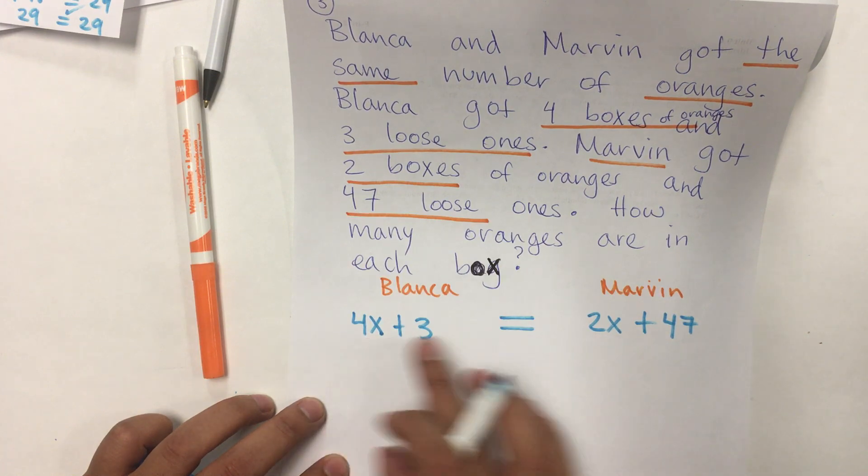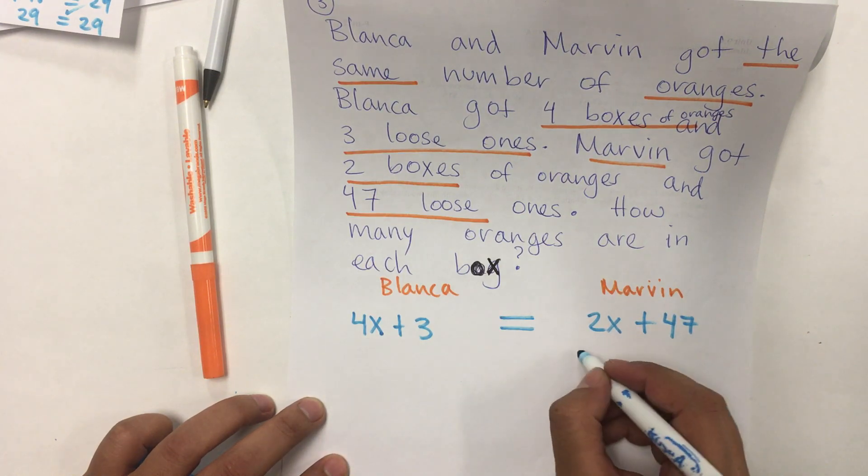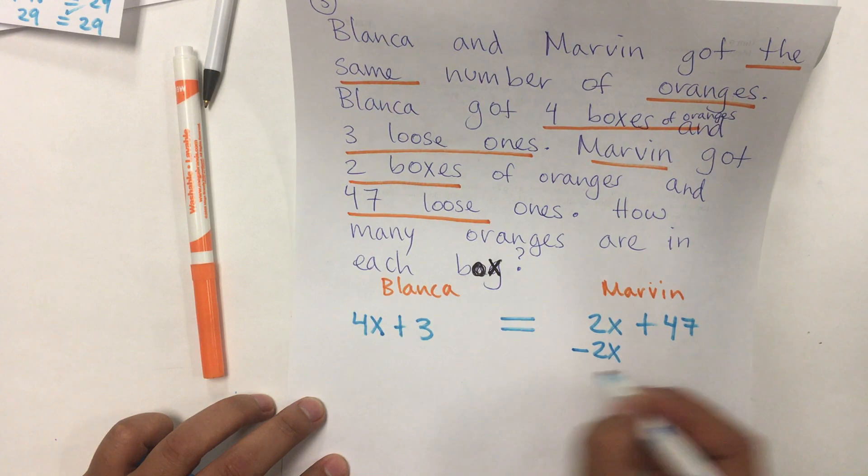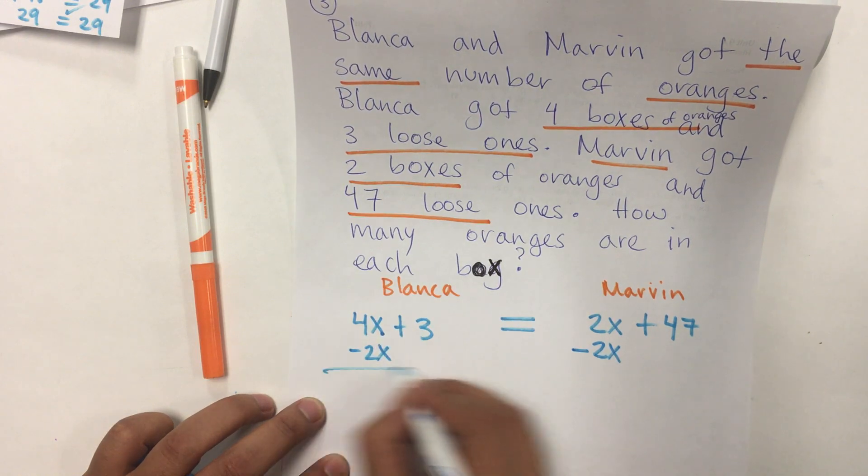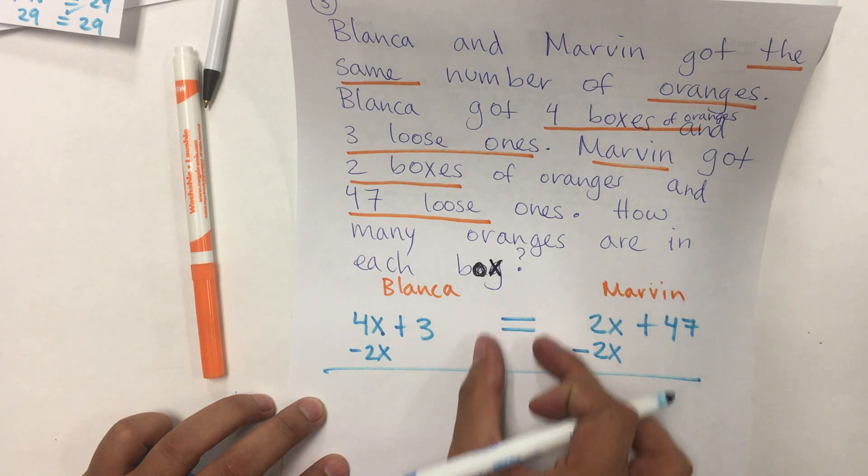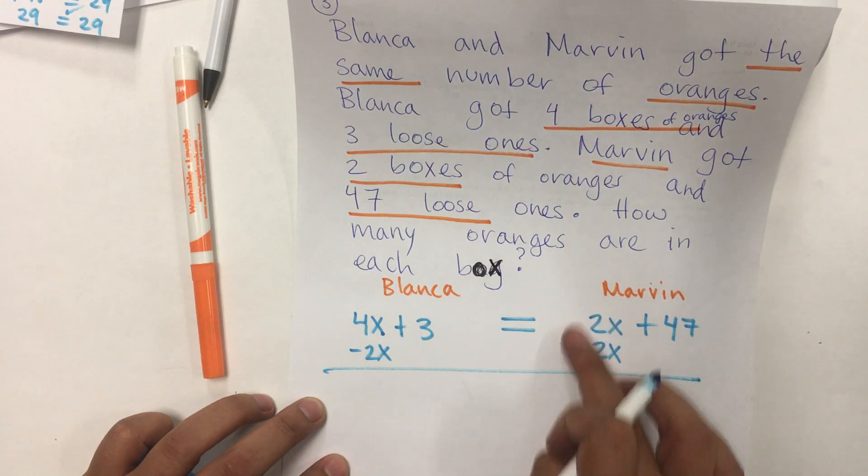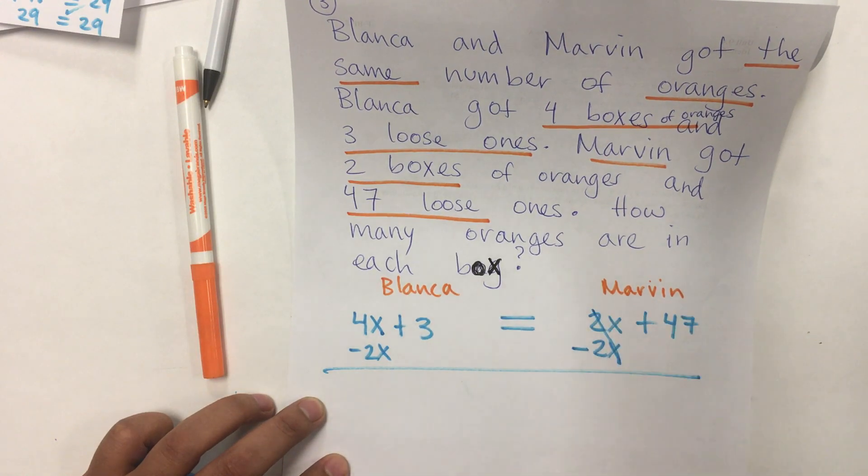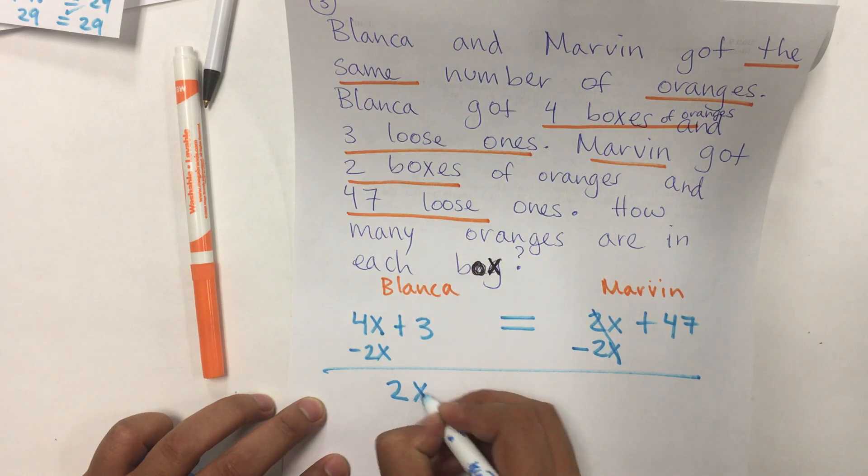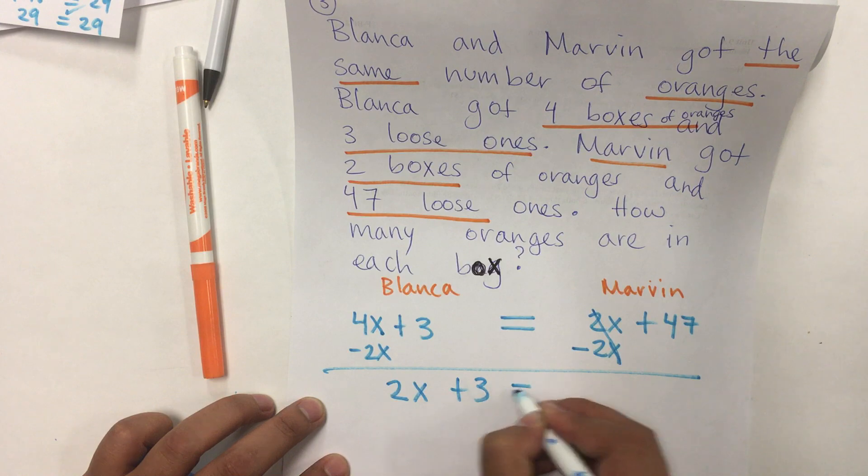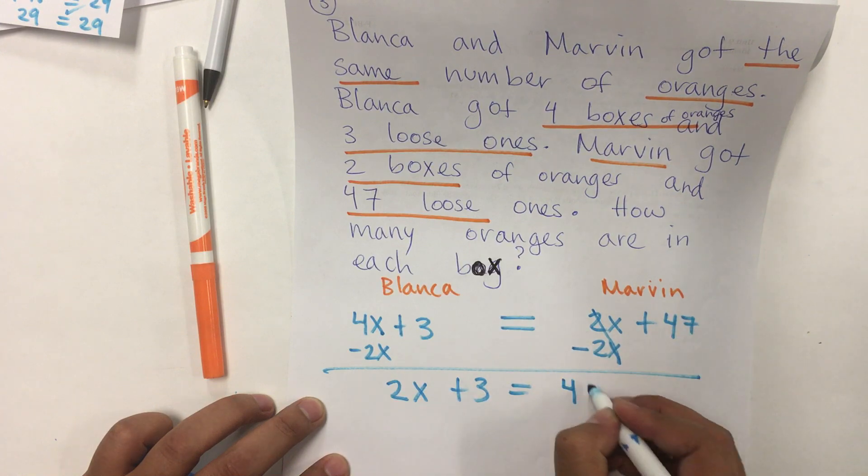Now, in here, we cannot have variables on both sides of the equation. So, we're going to cancel the variable term. On the other side, we cannot have that. Cancel the whole term. This whole term cancels for x minus 2x. Now, we have 2x plus 3 equals 47.